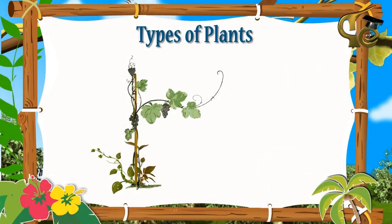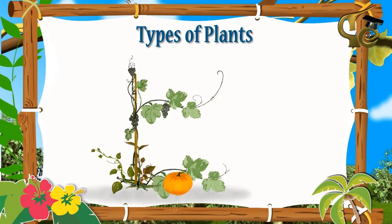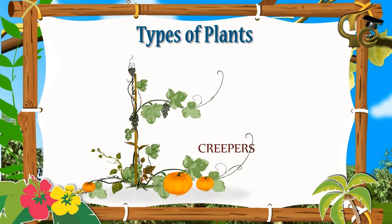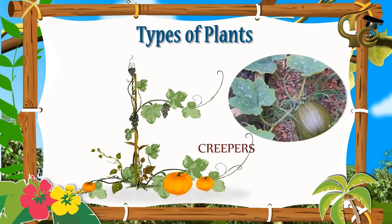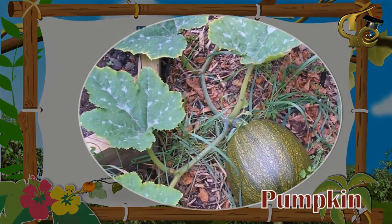Some plants grow along the ground. Such plants are called creepers. An example is pumpkin.